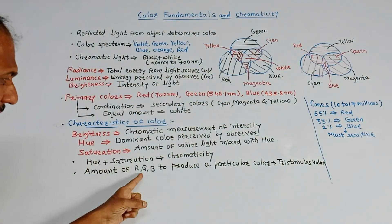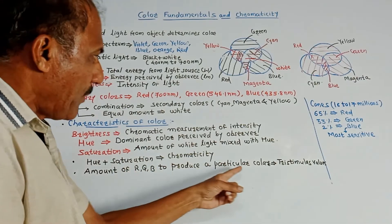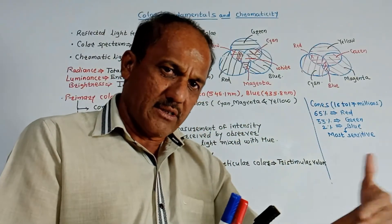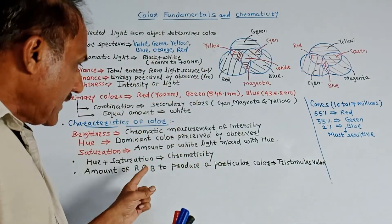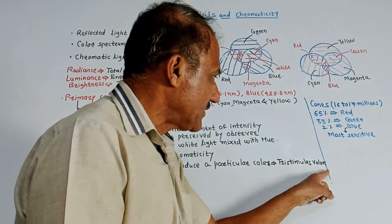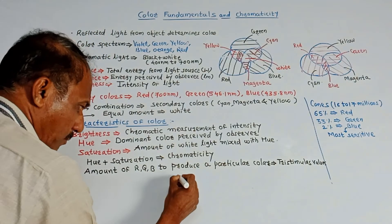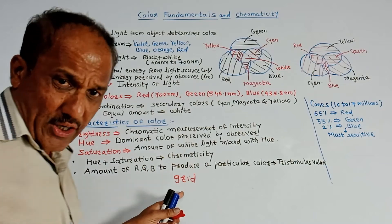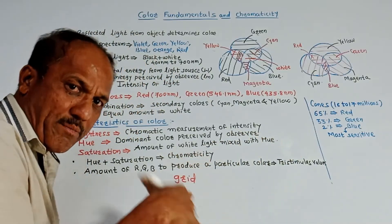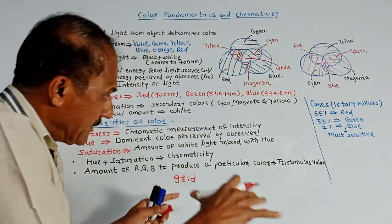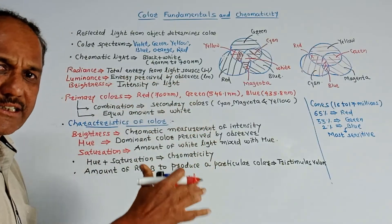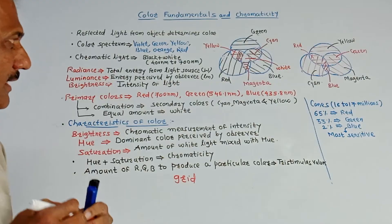The amount of RGB required to produce a particular color — this amount is decided by values called tri-stimulus values. When you combine the three colors, different secondary colors are generated, and the particular amount of primary colors is determined by the tri-stimulus values. In case of color TV, there is a phosphorus grid. When this phosphorus grid is excited, every dot in the grid produces the primary colors R, G, B, and the combination of all these colors produces the secondary colors.